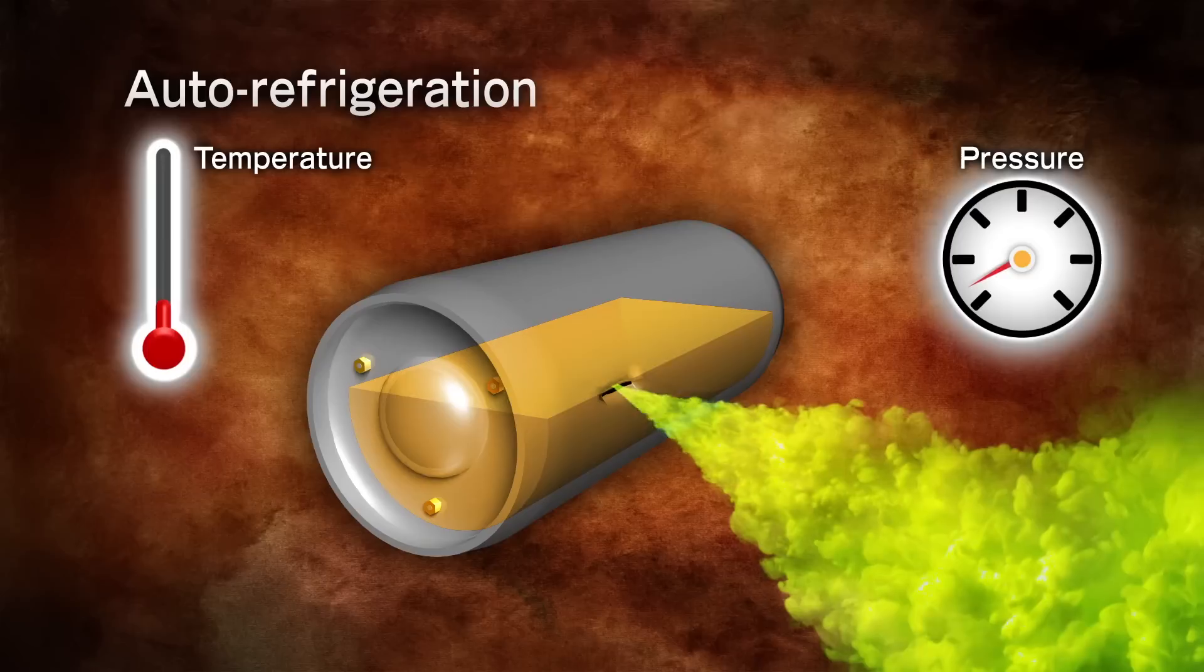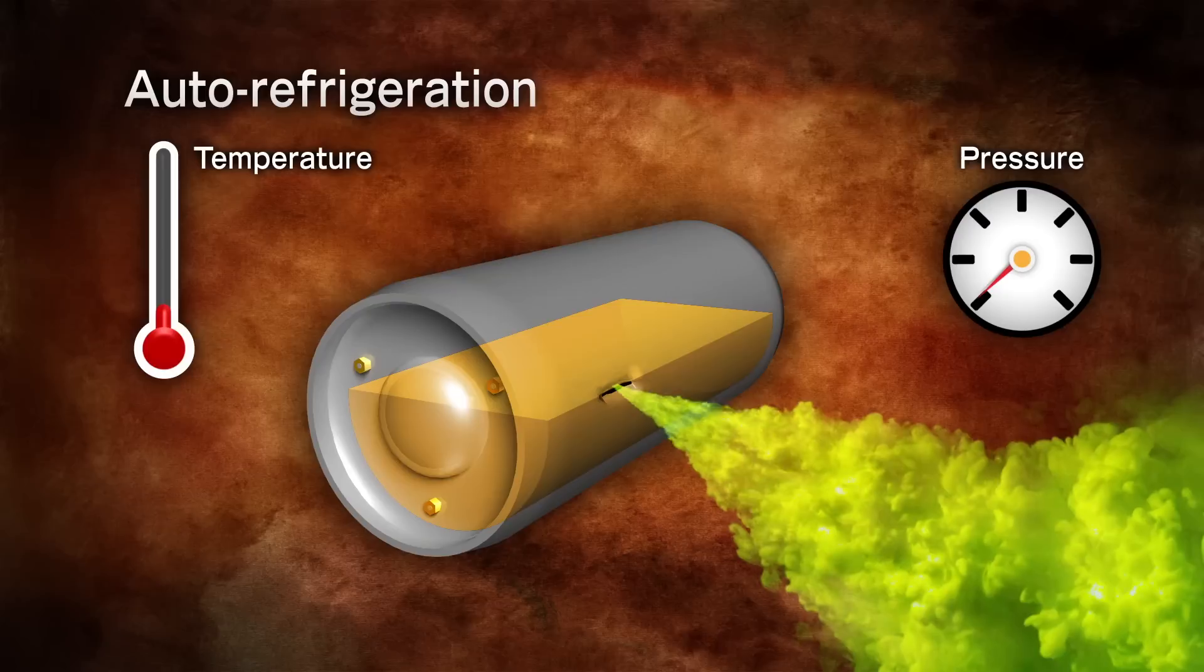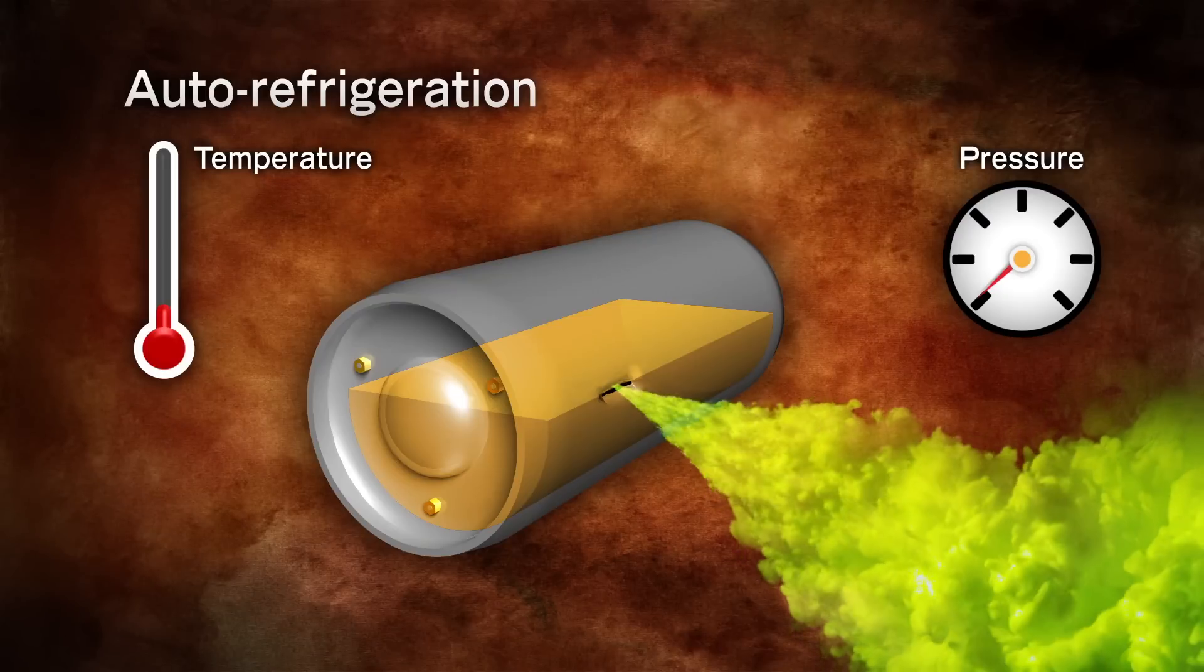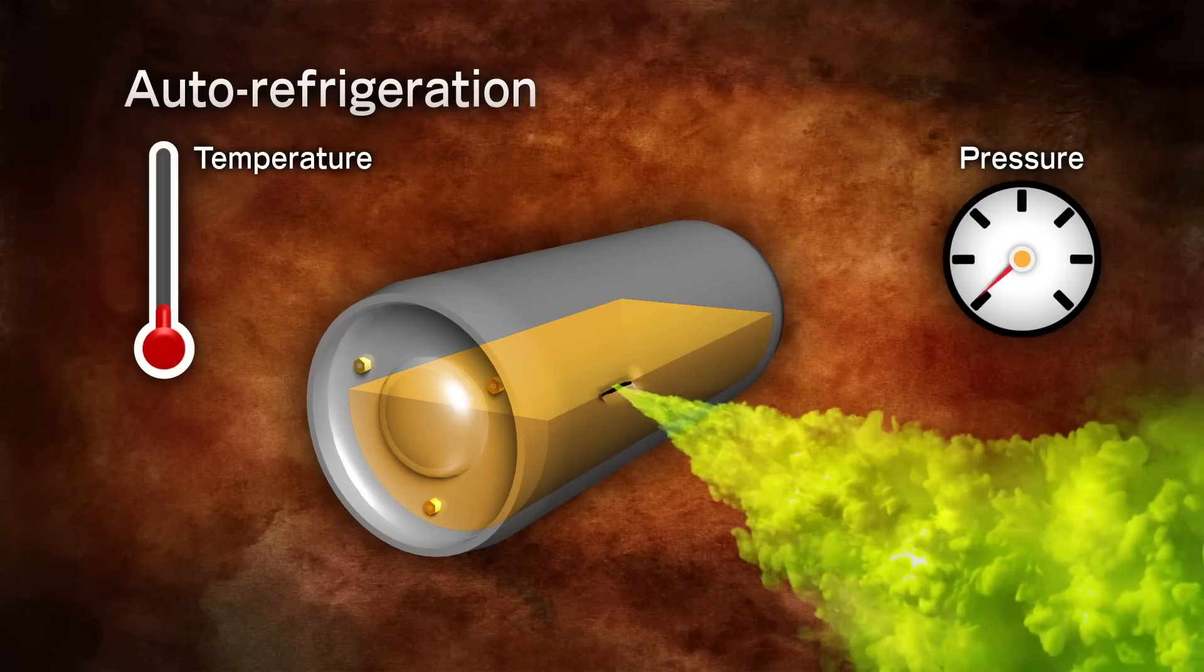auto-refrigeration takes place. Auto-refrigeration is the result of chlorine quickly escaping from the container, which causes the chlorine to cool down below its boiling point at the new lower pressure condition.